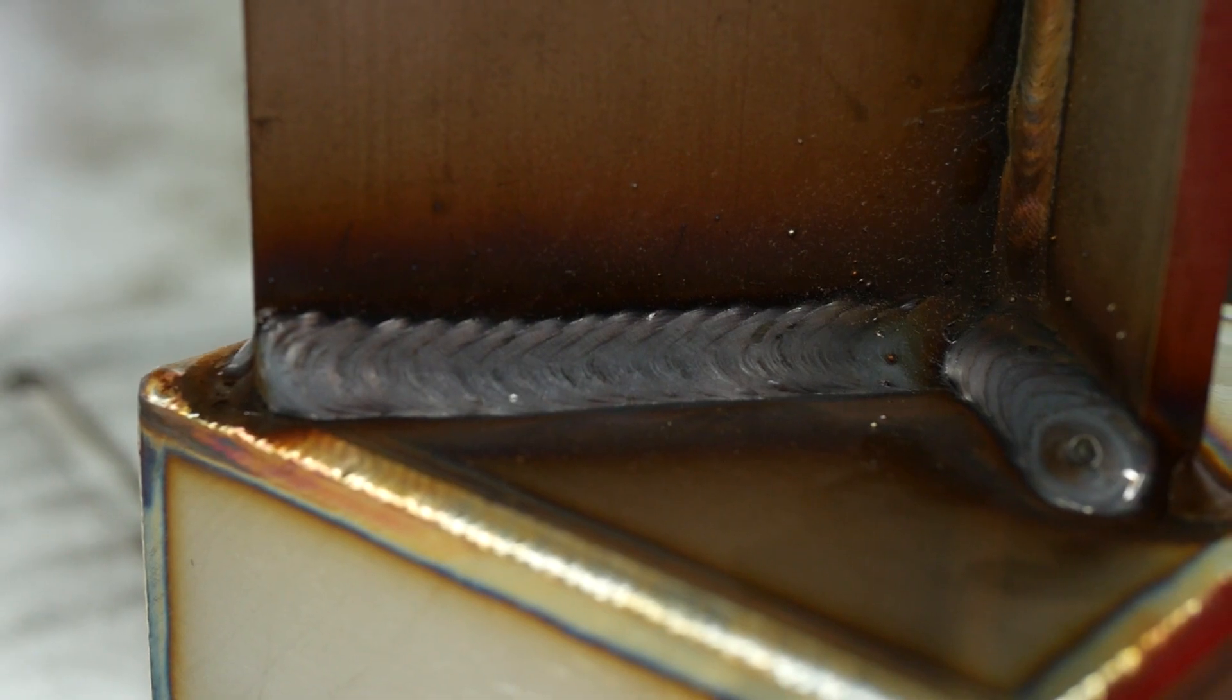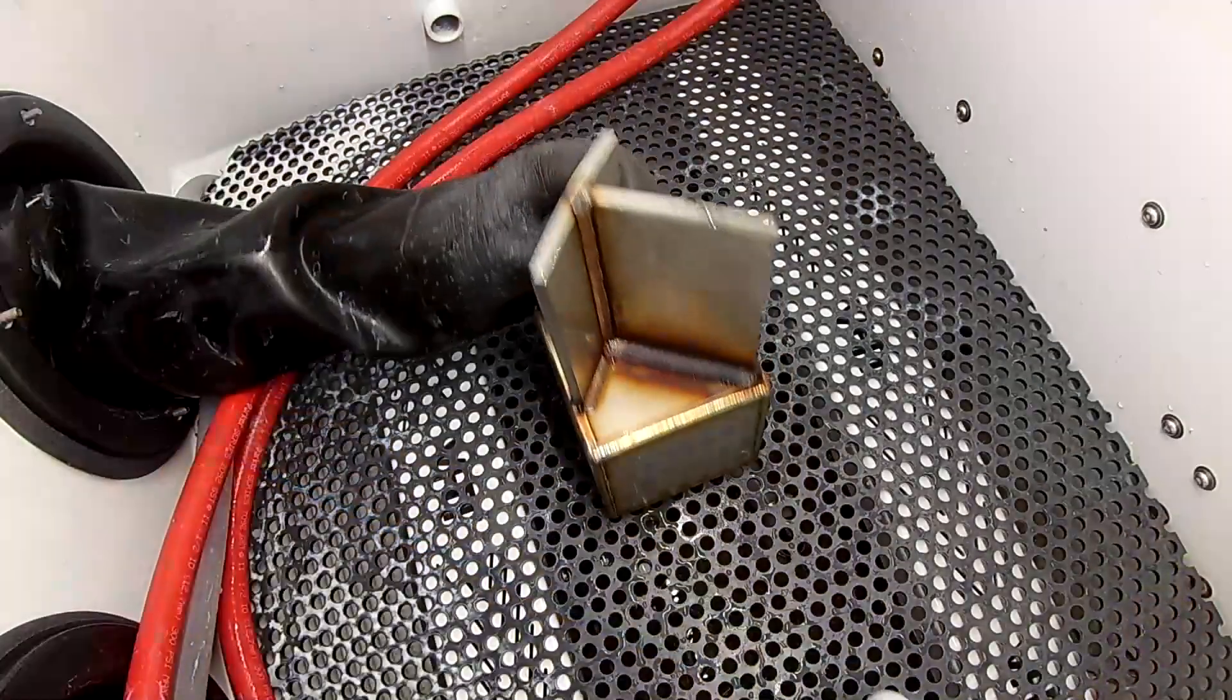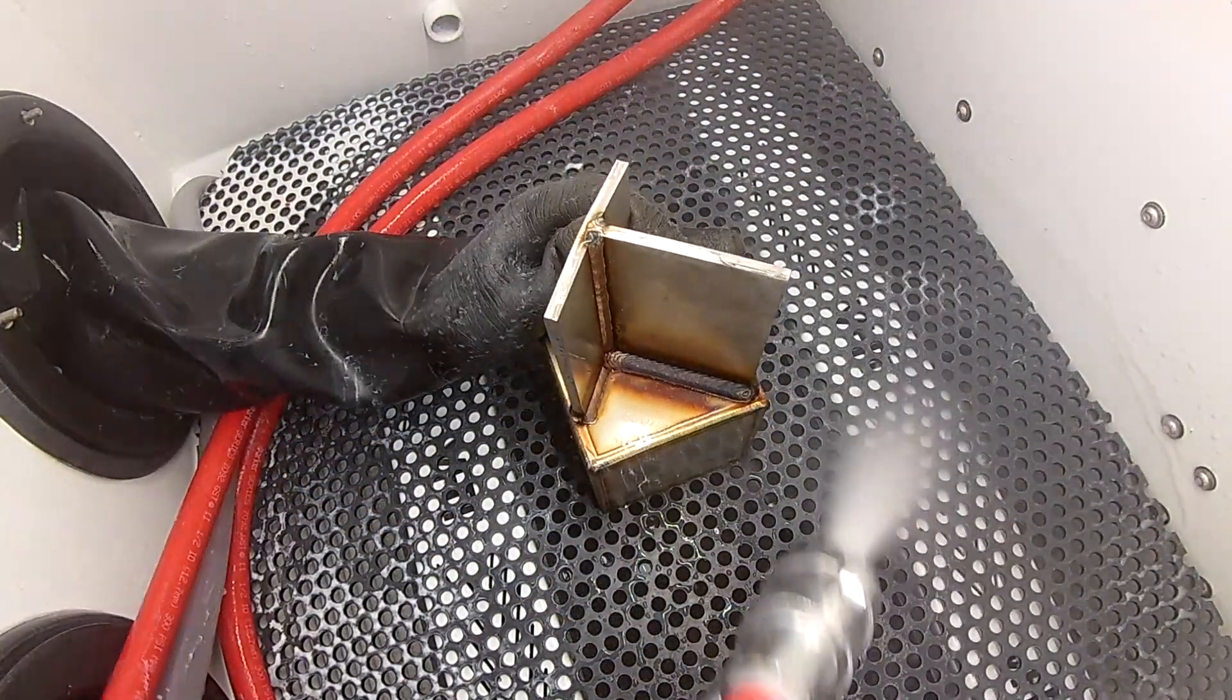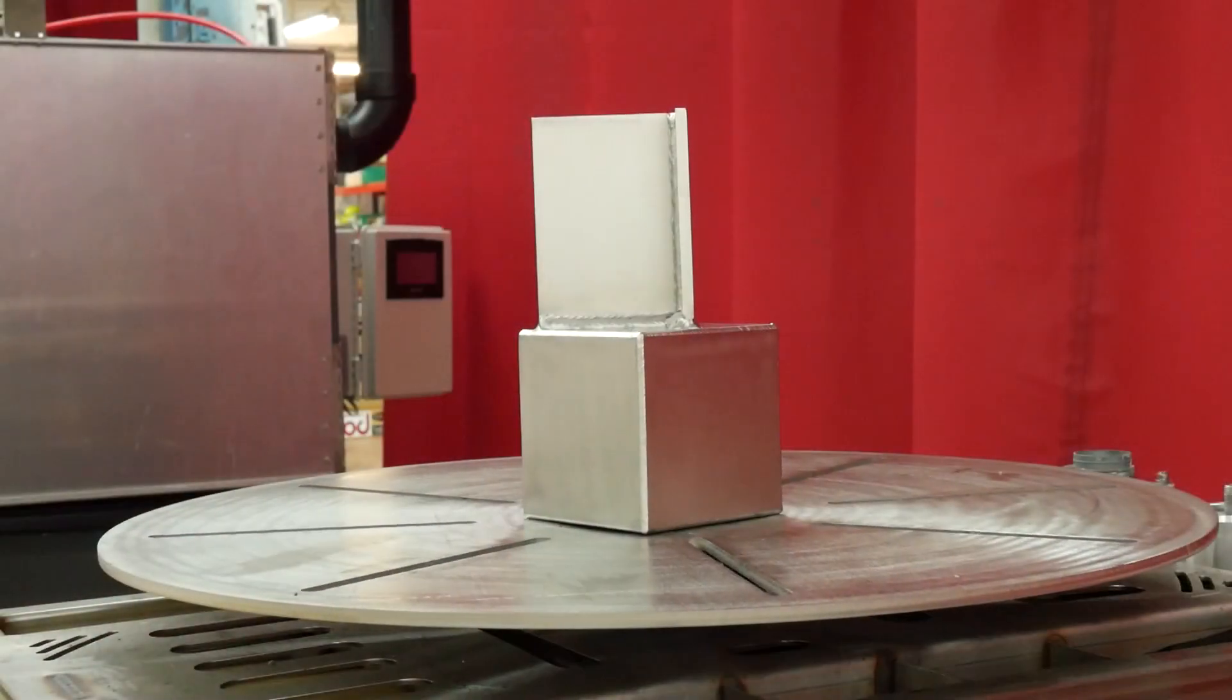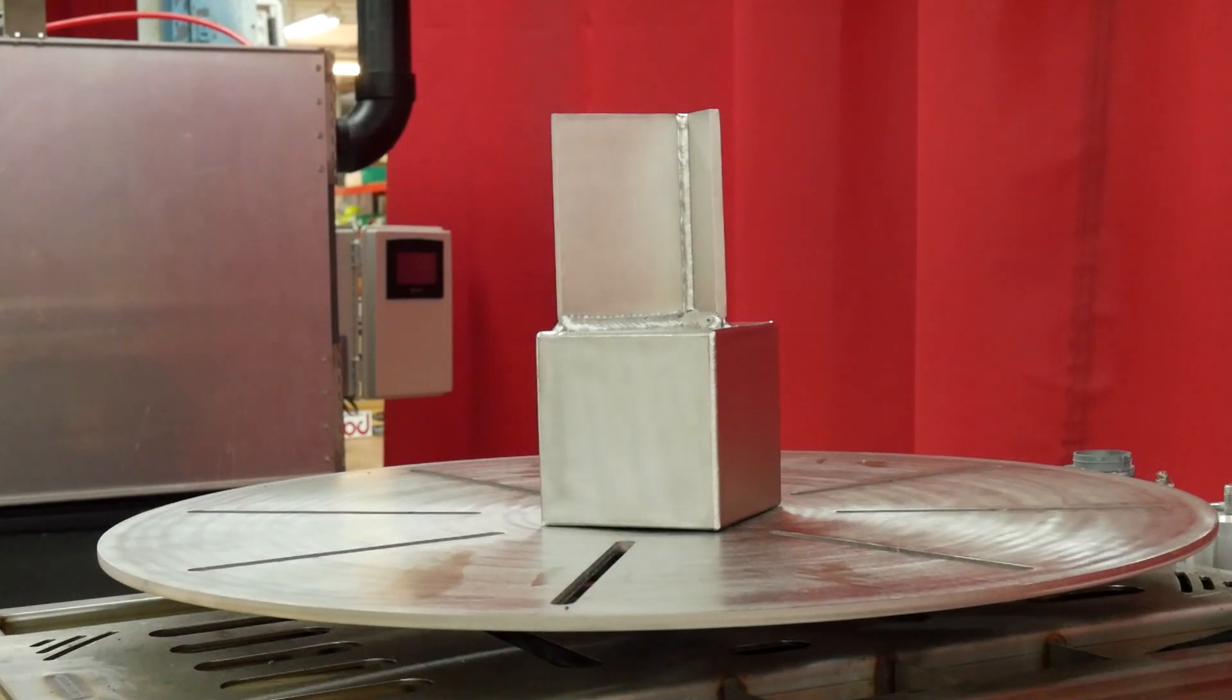What we did is we used a fine ceramic bead to remove the weld burns and the discoloration off of the part. It worked very well. Ceramic bead is great for this.